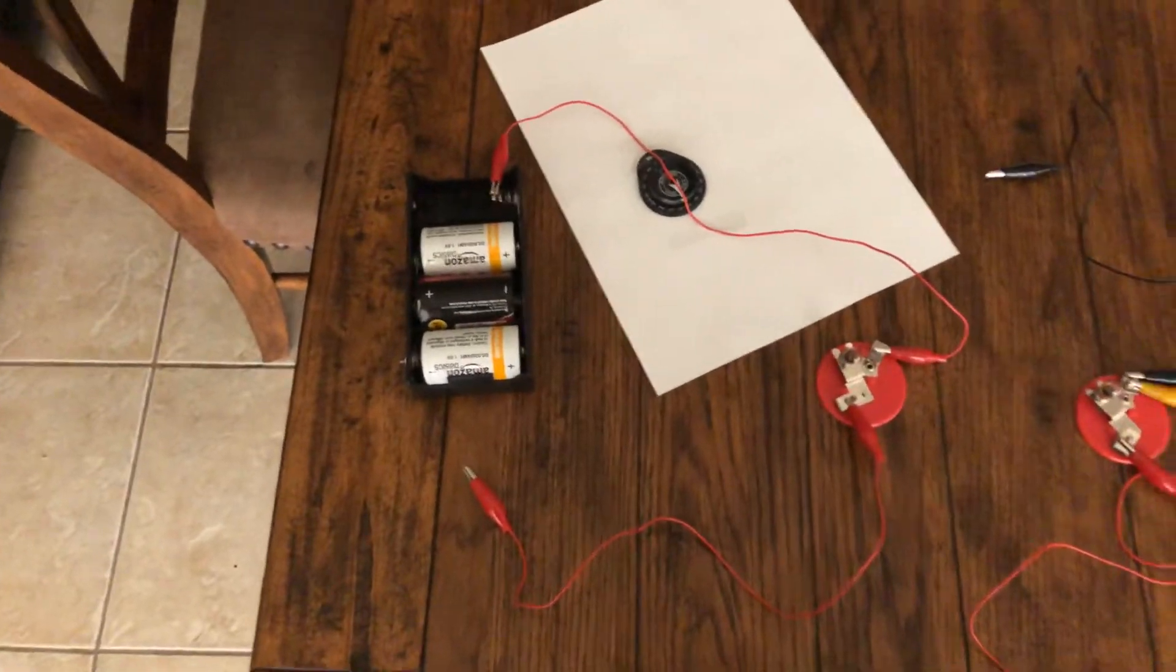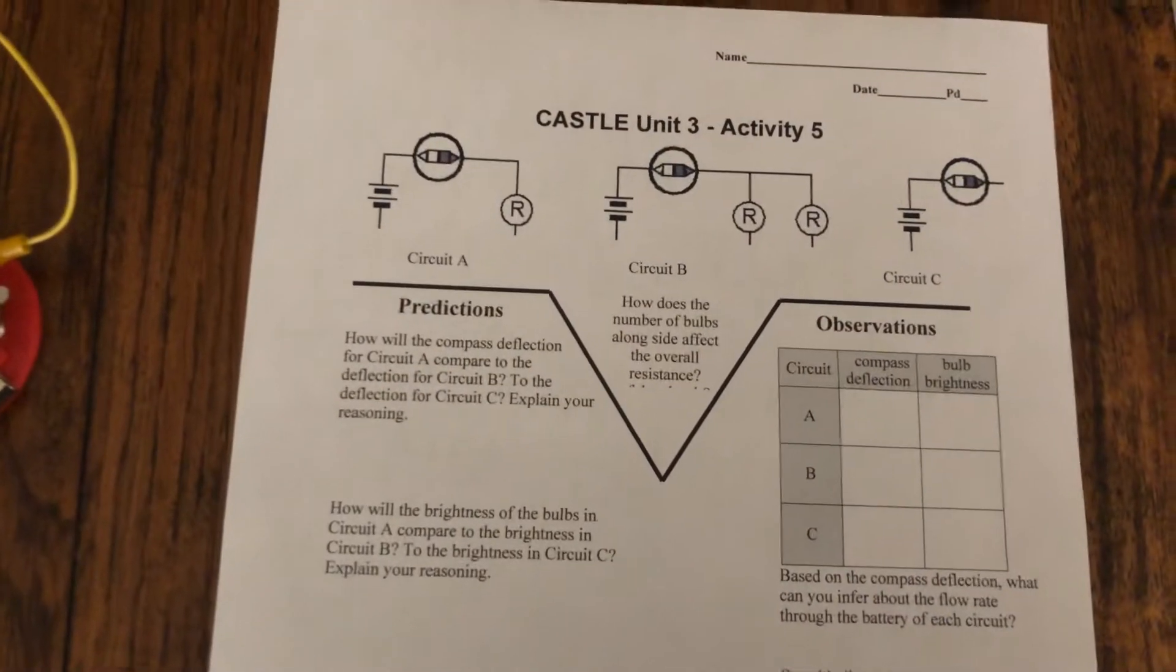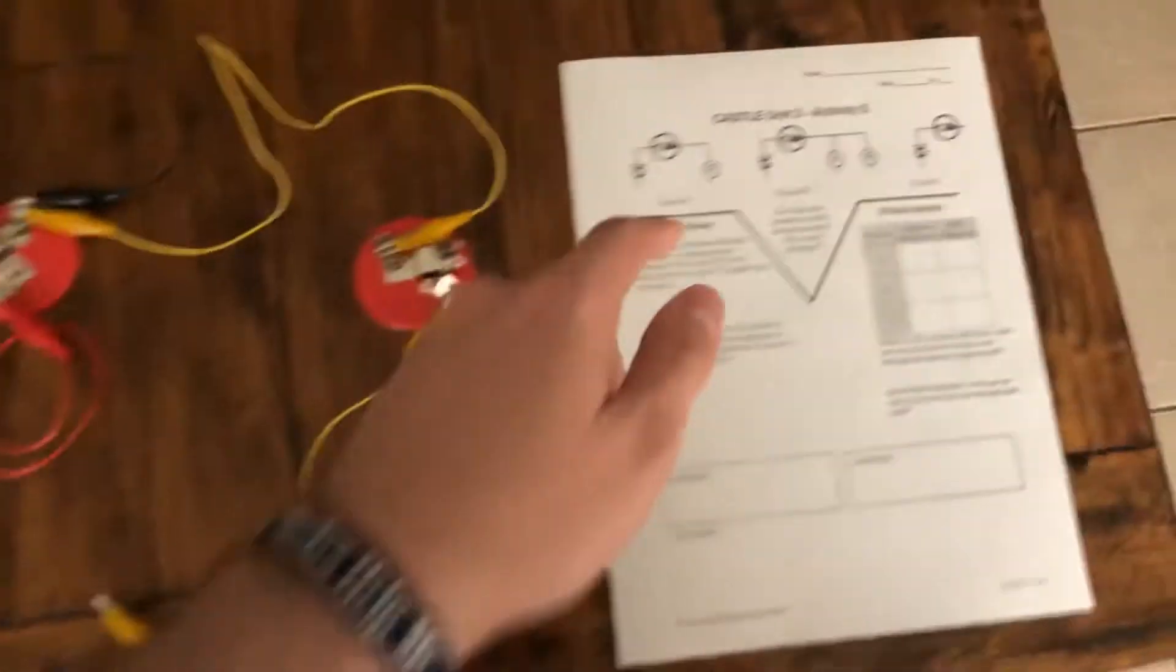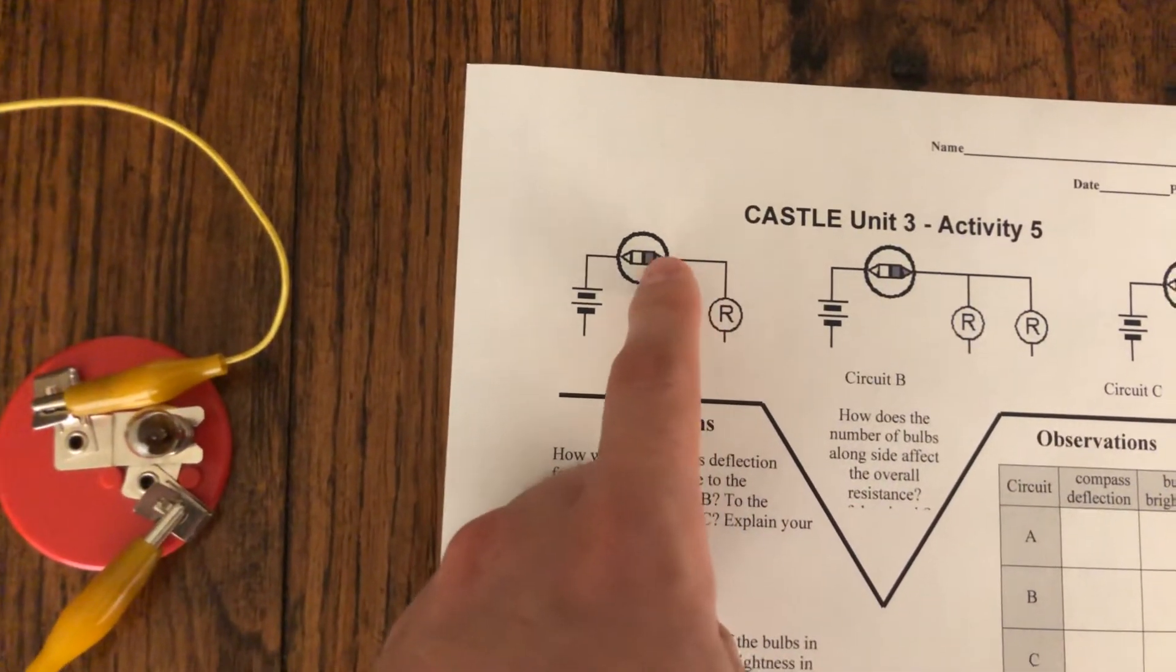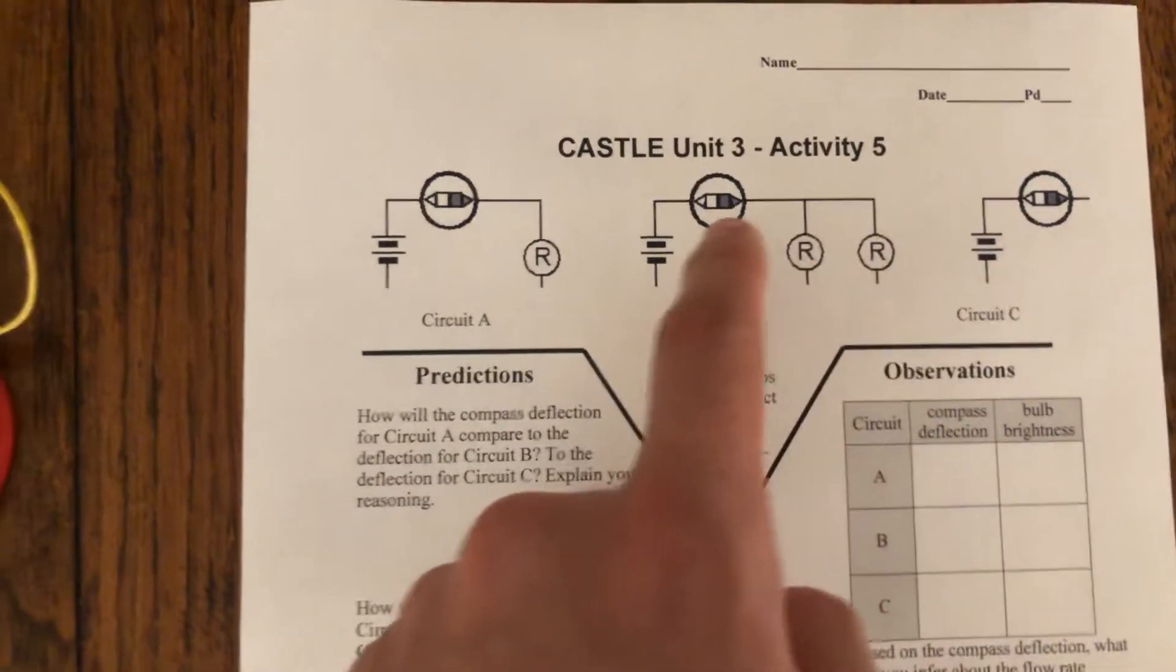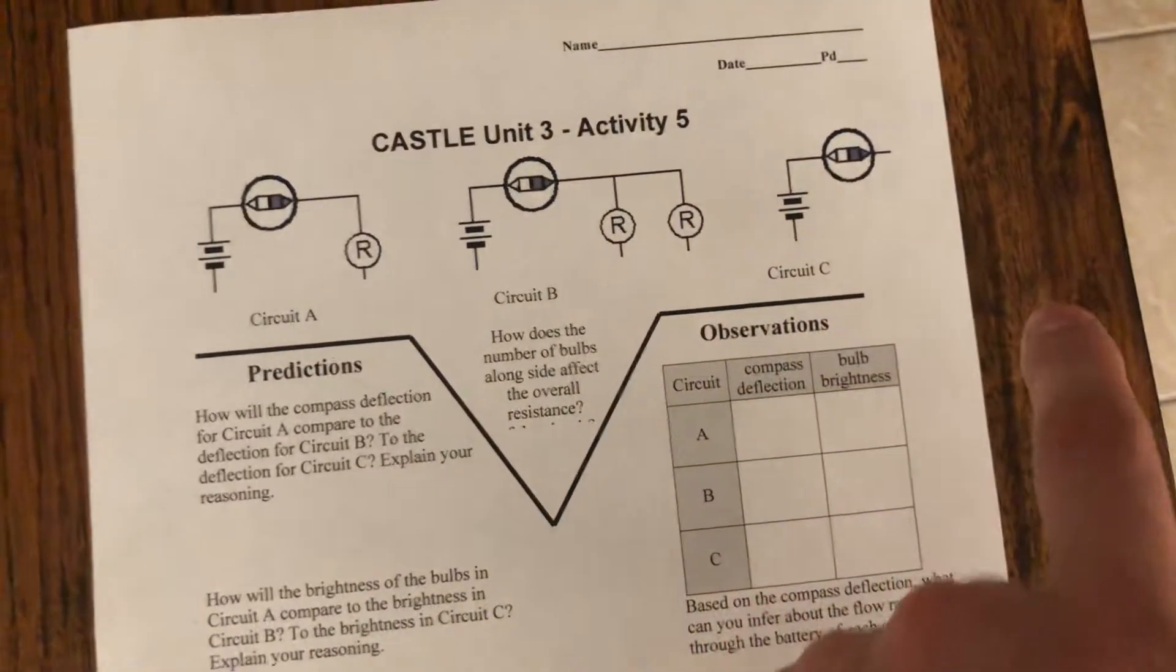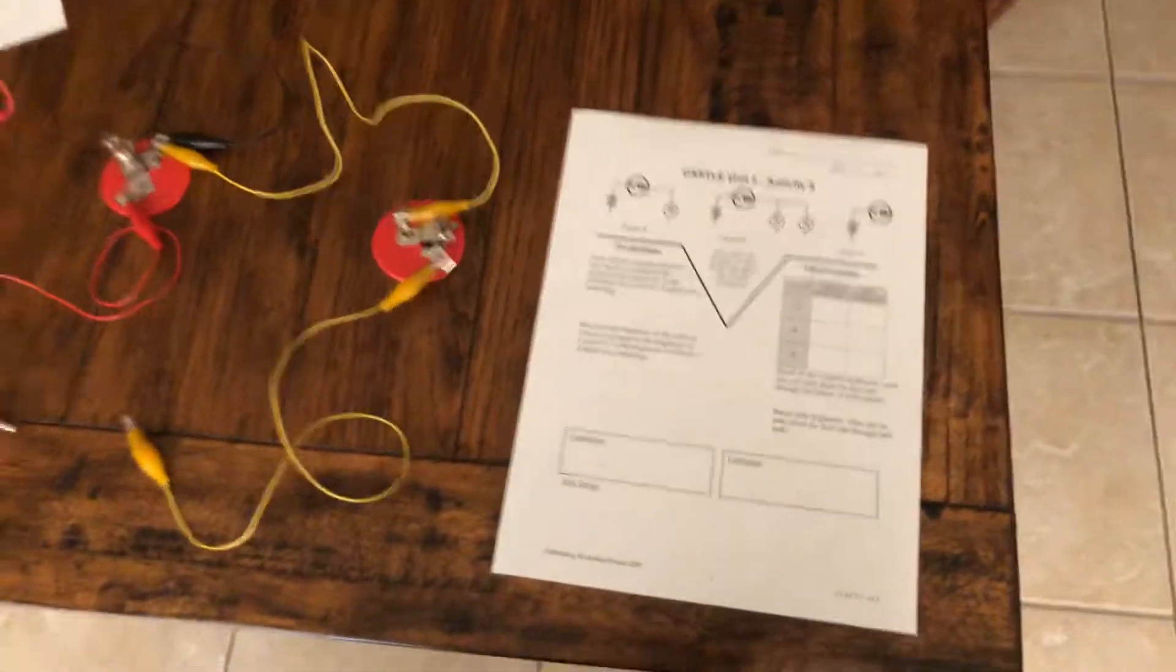Okay, what we're going to look at today is this focus question: how does the number of bulbs alongside each other or in branches affect the circuit? We've got that first bulb and then we're going to add another bulb in a second branch, so we're essentially giving that charge a second and then a third path along which it can flow.